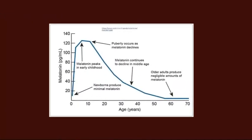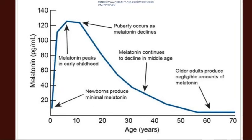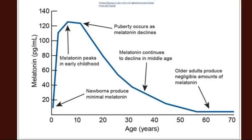Melatonin levels are zero when we are babies in our mother's wombs, meaning we depend exclusively on the circadian rhythm coming from our mothers. If a pregnant mother has poor circadian alignment, the baby will receive poor melatonin alignment, which could result in poor health outcomes for newborns.